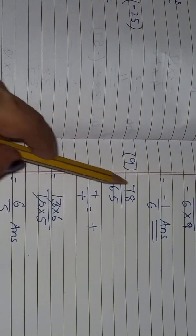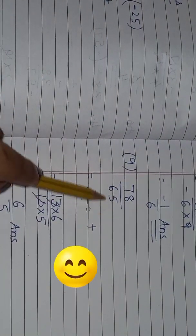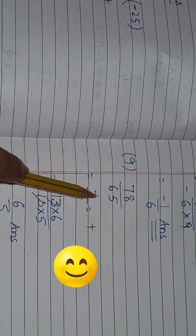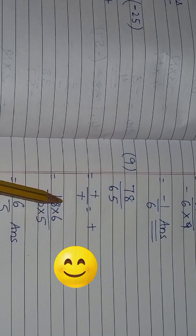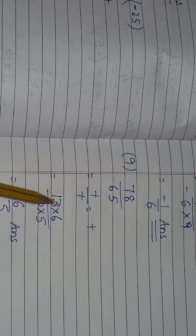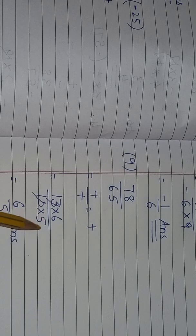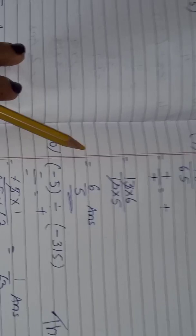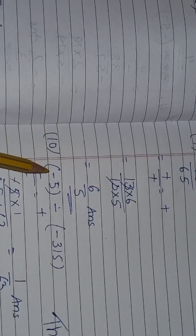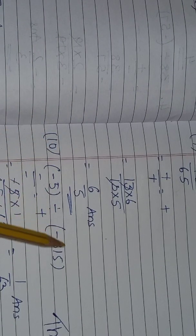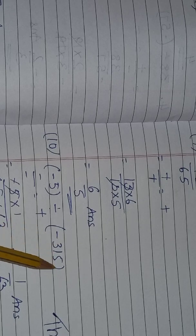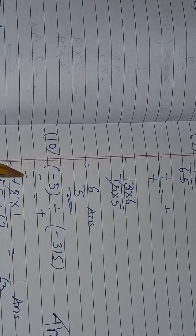Ninth question: 78 divided by 65. Both positive, so sign is positive. 13 is the main table: 13 × 6 are 78, 13 × 5 are 65. Cancel the 13s — you get 6 upon 5. It is not reducible further, so write down 6 upon 5. Now the last question: minus 5 divided by minus 315.